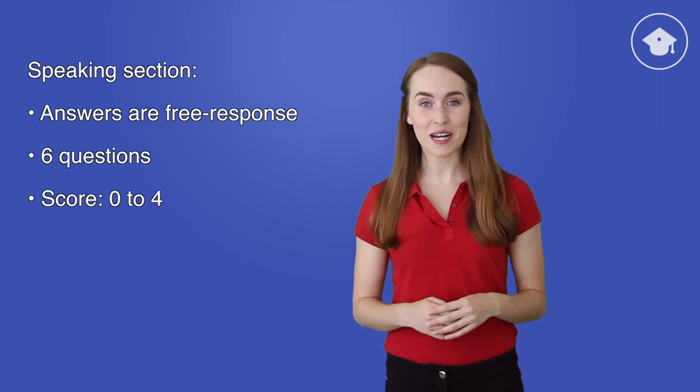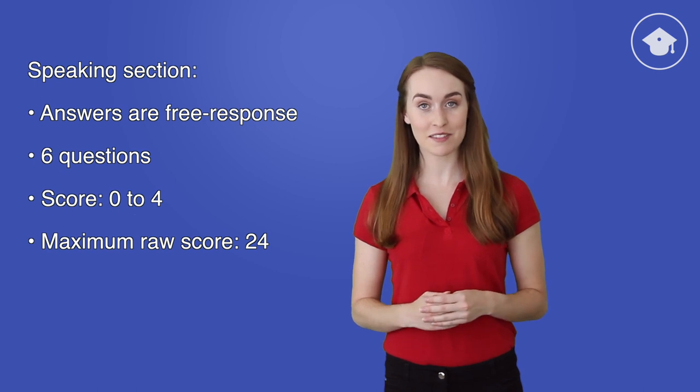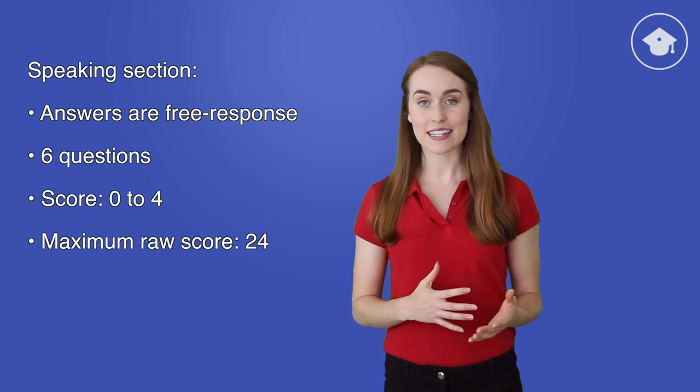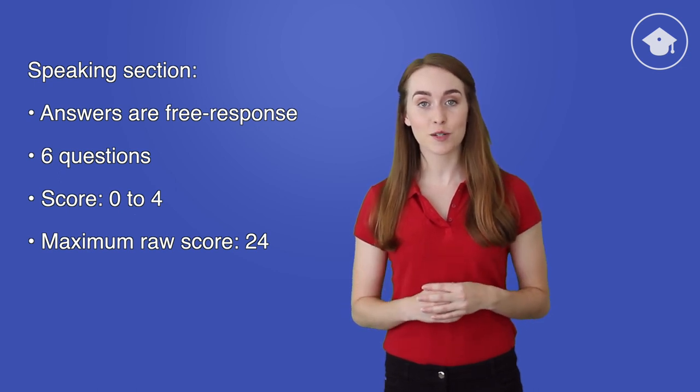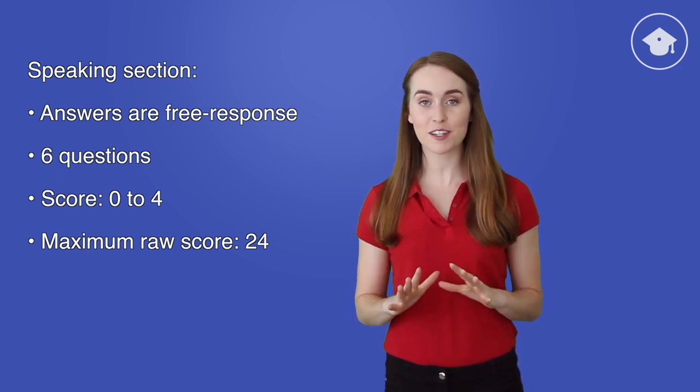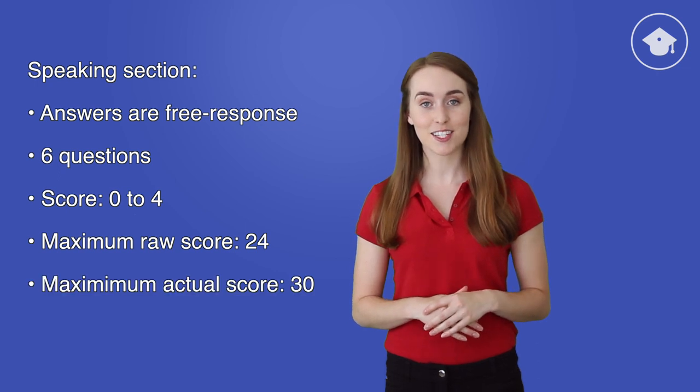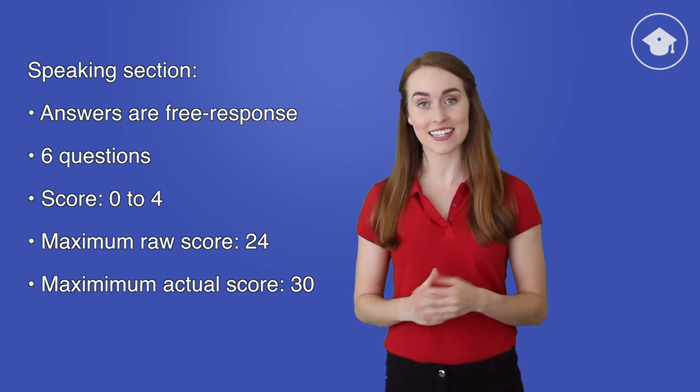So you can get a maximum raw score of 24, four points for each of the six questions. Your raw score is then converted into an actual score. A perfect score is a 30, just like on the reading and listening sections.